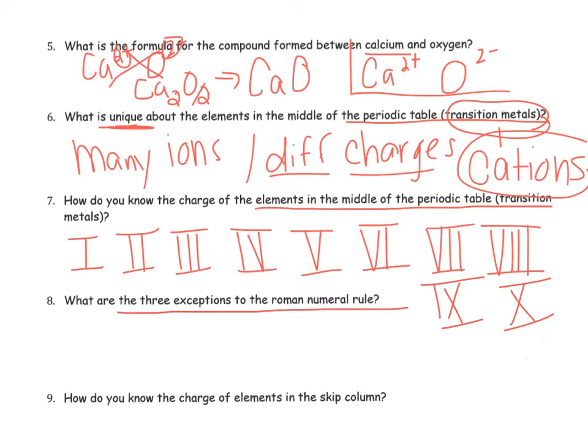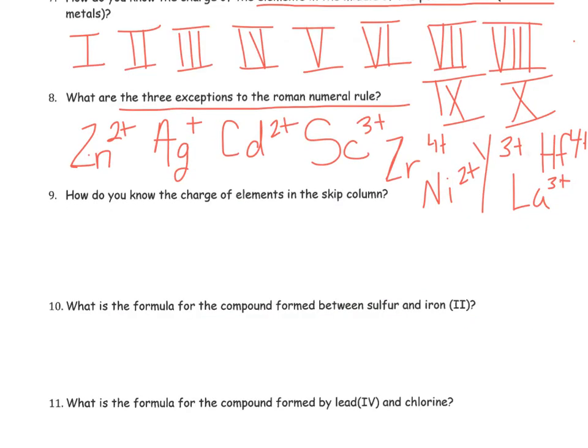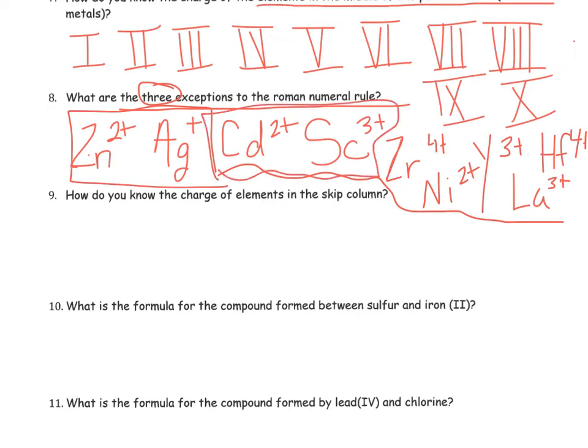There are 3 exceptions to the Roman numeral rule. Well, as it turns out, in recent years, there's probably a little bit more than 3 exceptions. These transition metals, zinc, silver, cadmium, scandium, zirconium, nickel, hafnium, they all have known charges. They only make one oxidation number, so they usually don't get a Roman numeral. But for the most part, you're not going to be tested outside of zinc and silver. Zinc has a positive 2 charge, and silver always has a positive 1 charge. So, oftentimes, they will not get a Roman numeral.